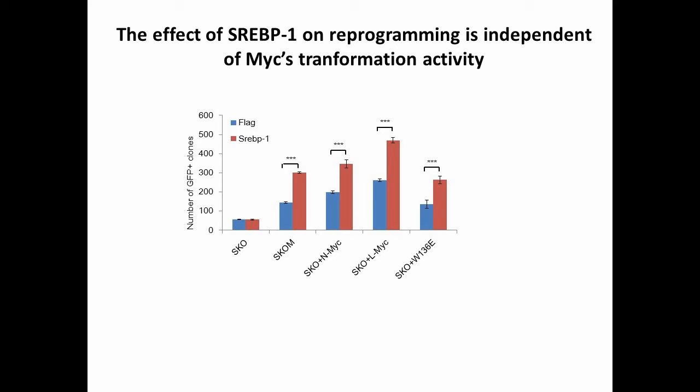We know that overexpressing cMyc is a double-edged sword in reprogramming — it not only enhances reprogramming but can induce tumor regeneration. So we tested the effect of SREBP1 on N-Myc, IR-Myc, or cMyc W136E mutation, and all three have little transformation activity. Our data shows that SREBP1 can enhance all three conditions, indicating that its effects on reprogramming are independent of cMyc's transformation activity.